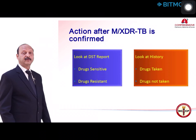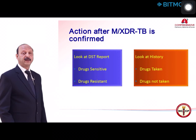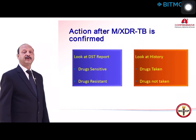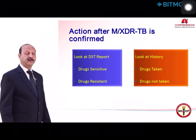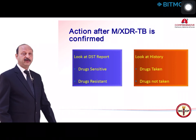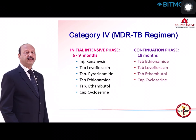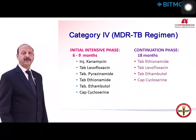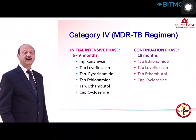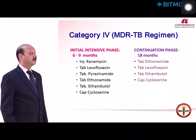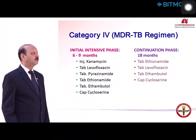When planning MDR-TB or XDR-TB treatment, first look at the DST report — which drugs the laboratory says are sensitive or resistant — keeping in mind which results are reliable. Then review the history carefully: list which drugs the patient has taken, for how long, and whether regularly or irregularly. Design the regimen using both sources of information. In the MDR-TB intensive phase, treat the patient for a minimum of 6 months, extendable to 9 months based on culture conversion. The regimen includes injectable kanamycin, levofloxacin, pyrazinamide, ethionamide, ethambutol, and cycloserine.